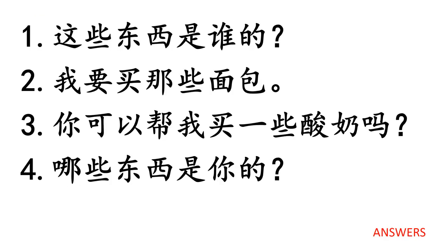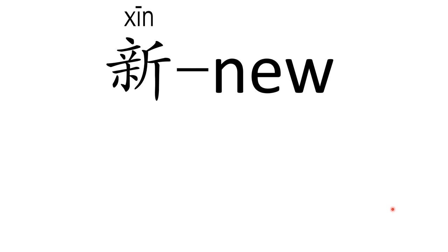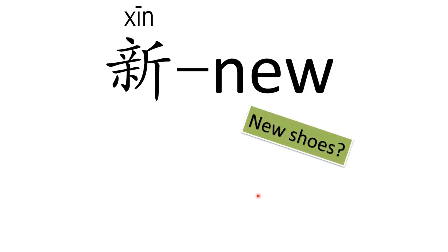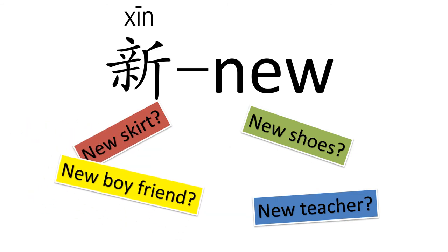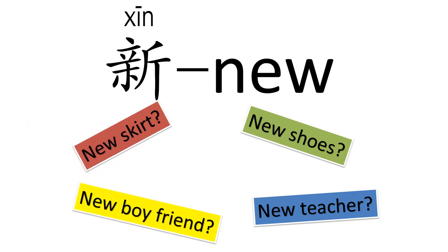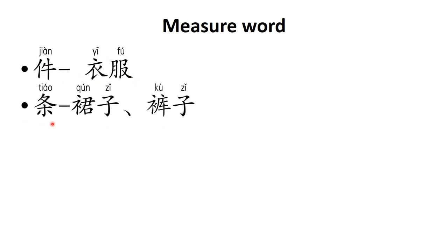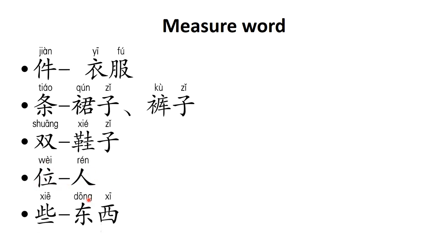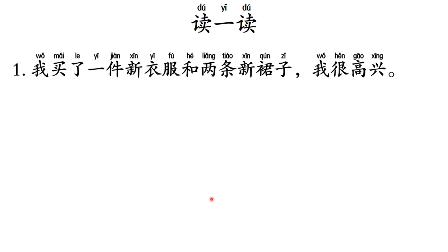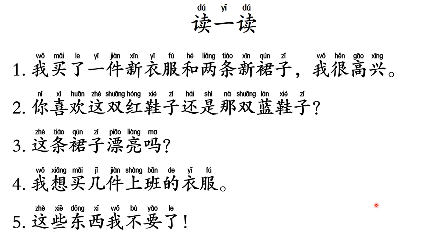And these are the answers. 新 means 'new'. How do we say 'new shoes', 'new skirt', 'new teacher', or 'new boyfriend'? Now let's review the measure words we learned today: 件 for 衣服, 条 for 裙子 or 裤子, 双 for 鞋子, 位 for people, 些 for plural things.